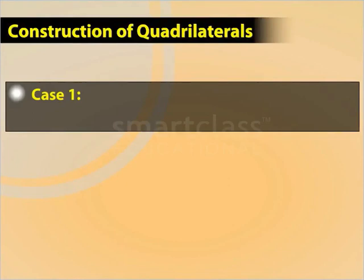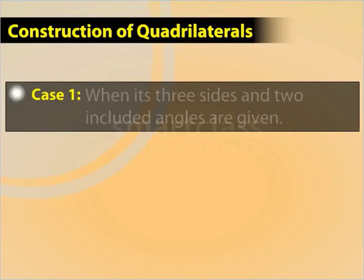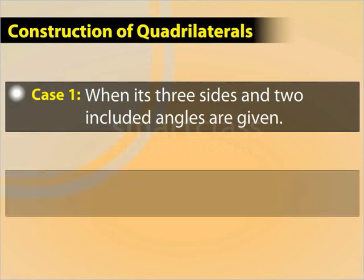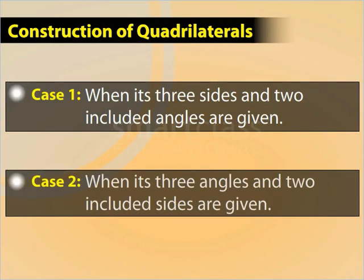First, we'll construct a quadrilateral when its three sides and two included angles are given. And second, when its three angles and two included sides are given.